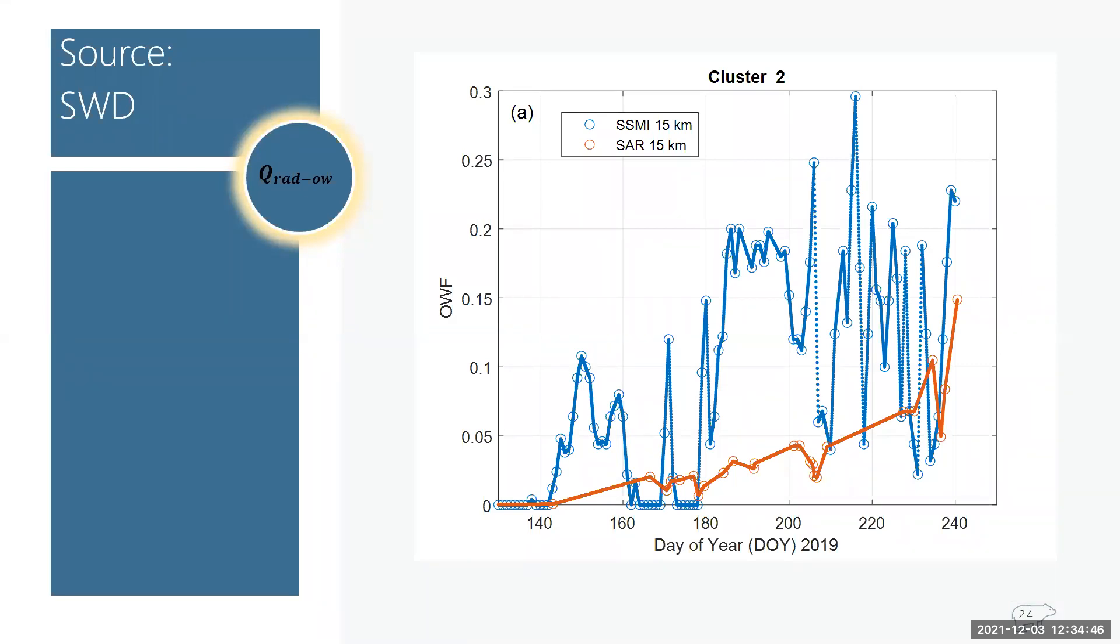And so after getting open water fraction for both sources, this is what I got for the summer of 2019. And I first want to point out the x axis for pretty much all of the data figures. It's going to be the same and the x axis represents time, but it's a range of day of year. So it starts on day of year 130, which is May 10th, and it goes to day of year 240, which is August 28th. And for this figure, the y axis is open water fraction, so how much open water there is, and the blue data represents SSMI derived open water fraction, and the orange data represents the SAR derived open water fraction.